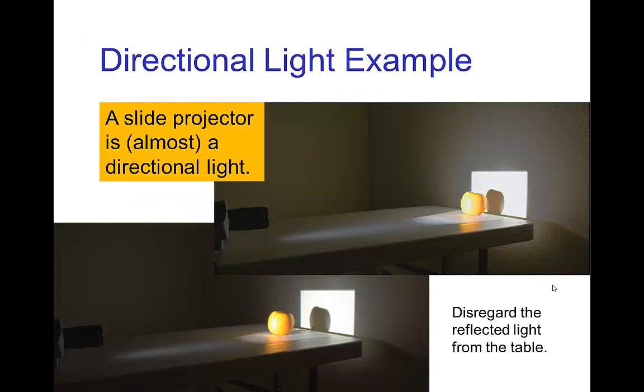Now an example of something which is approximately a directional light would be a slide projector light. The light that comes out is fairly focused in a straight line, so those rays are mostly parallel. You see the shadow of this apple doesn't change in size as we move its position.